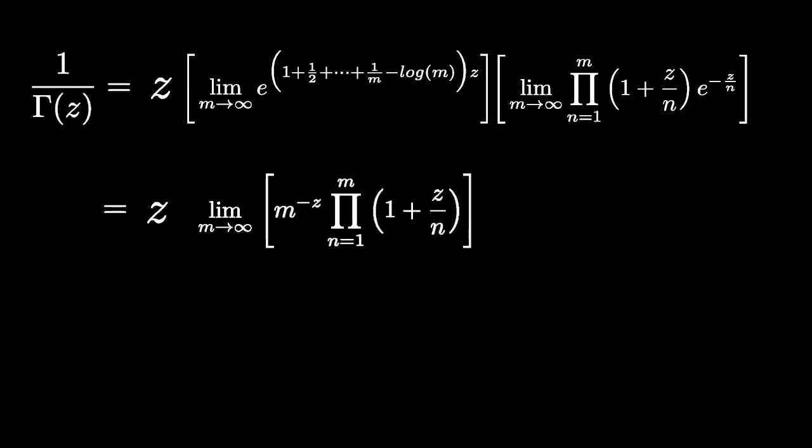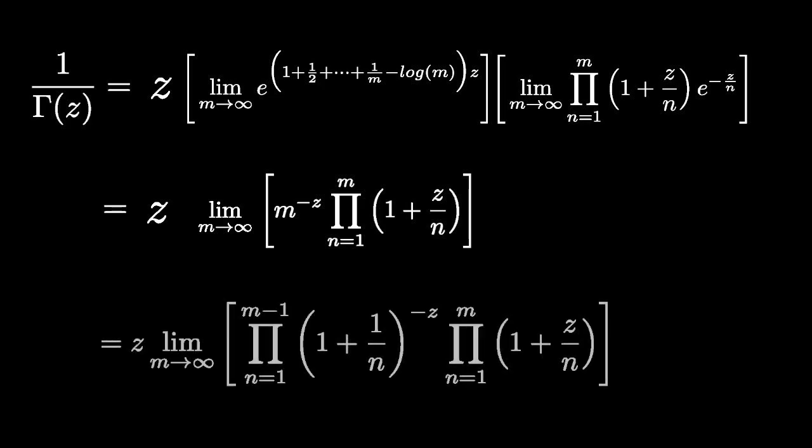Let's rewrite m as a telescoping product. Since this product goes from n equals 1 to m minus 1, we can add an additional factor of 1 plus 1 over m to the z and take both products at the same time.